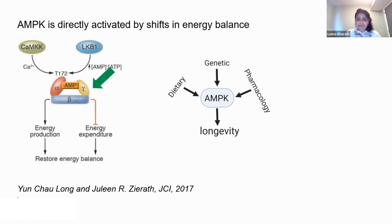AMPK protein is activated by the binding of adenosine monophosphate. When the cell is under energy stress — such as inadequate glucose intake or calorie restriction — there is a lack of ATP but higher levels of AMP. This elevated AMP binds to AMPK and activates it.